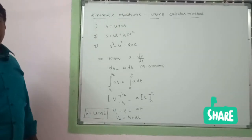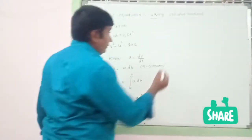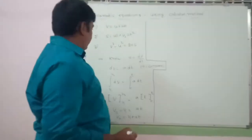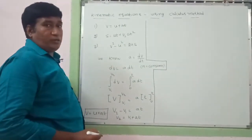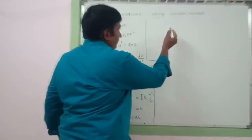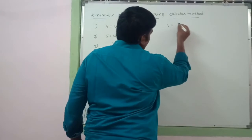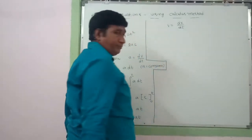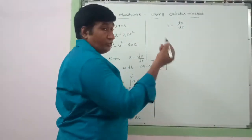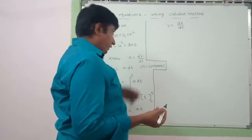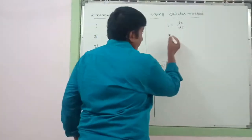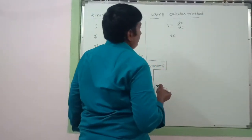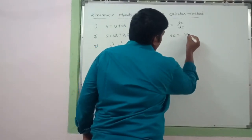This is the first kinematic equation which we have proved. Next, we should prove s = ut + ½at². We know v = dx/dt, or v = ds/dt. By cross multiplication we get dx = v·dt.